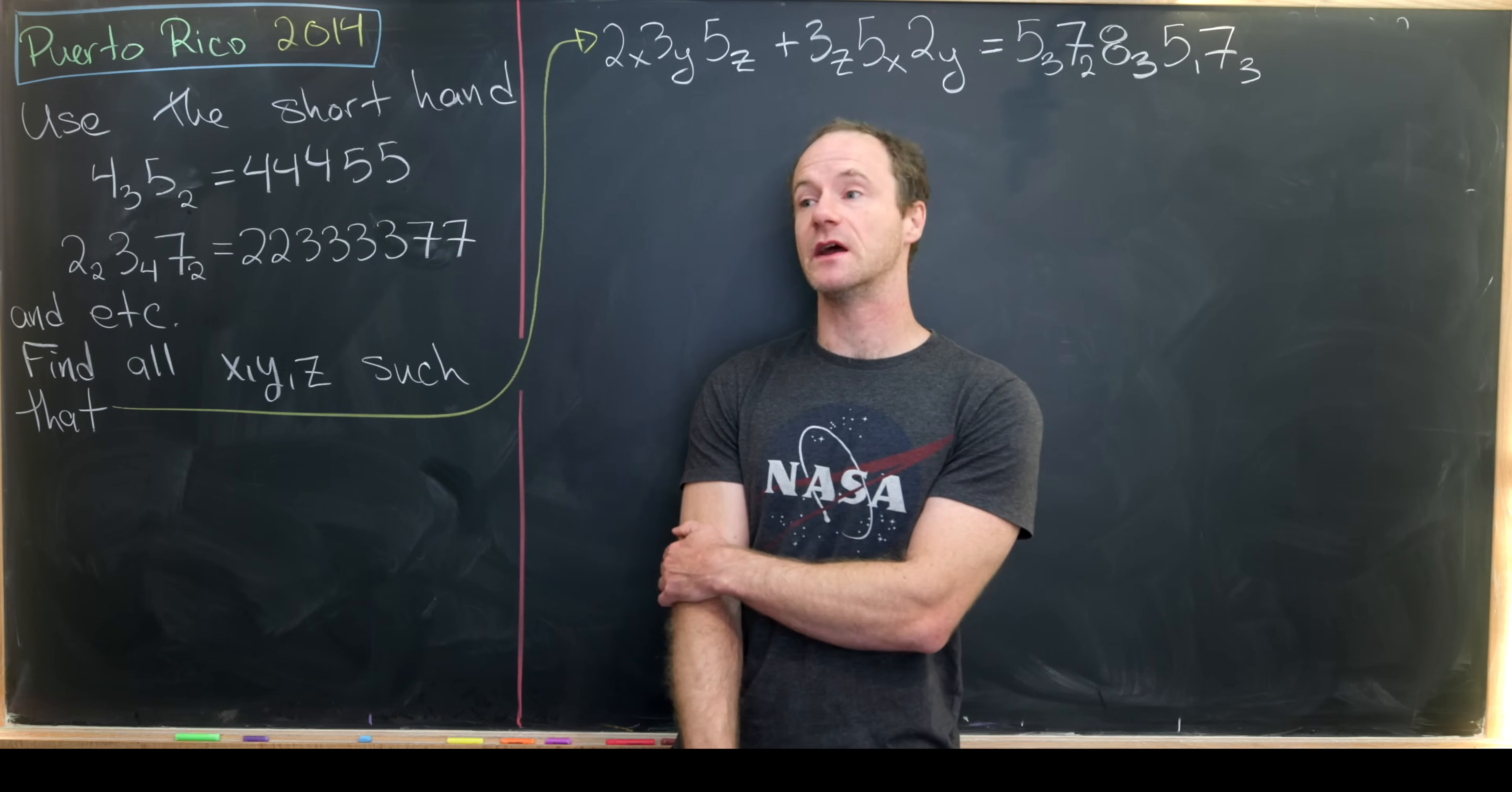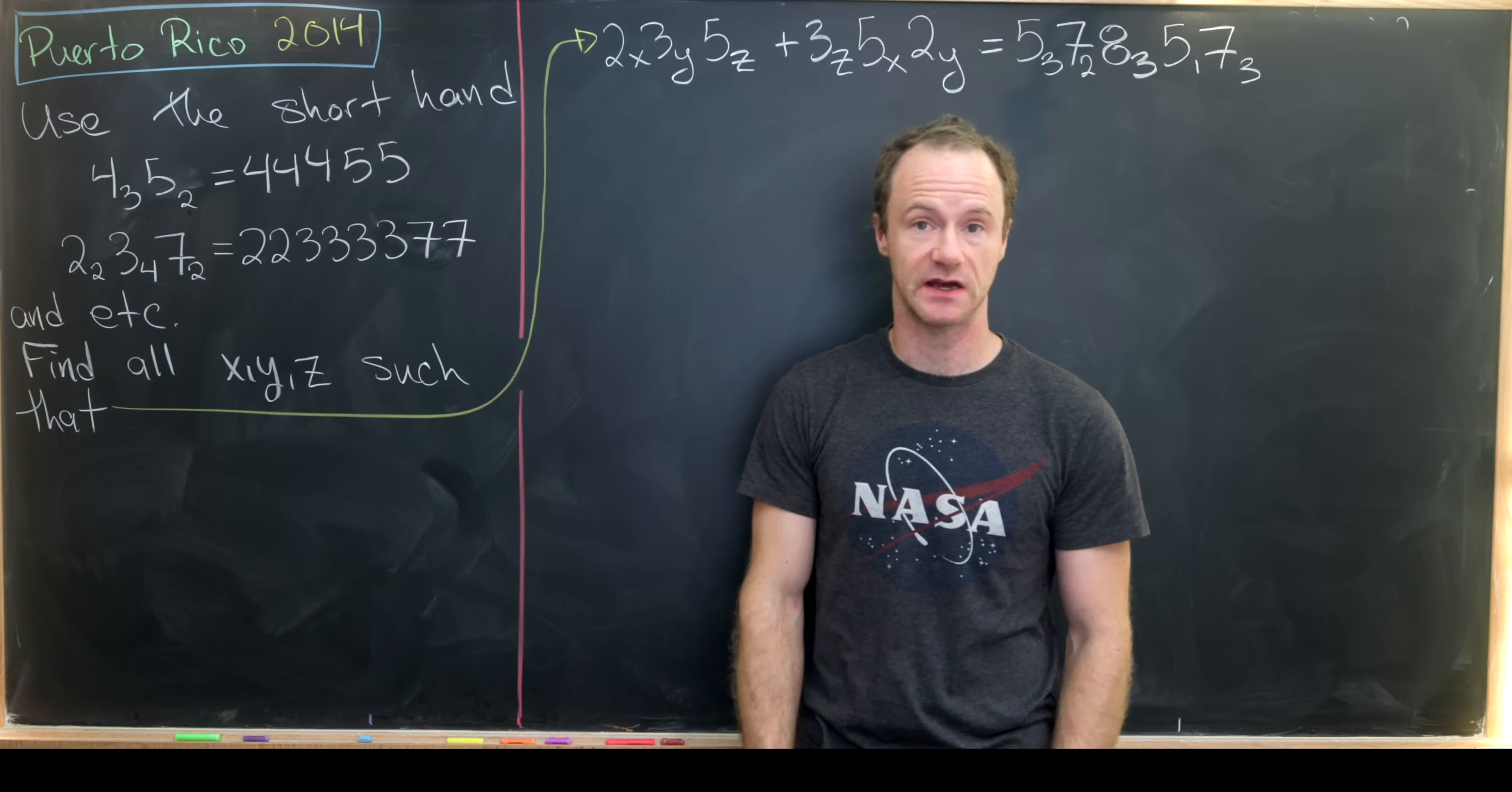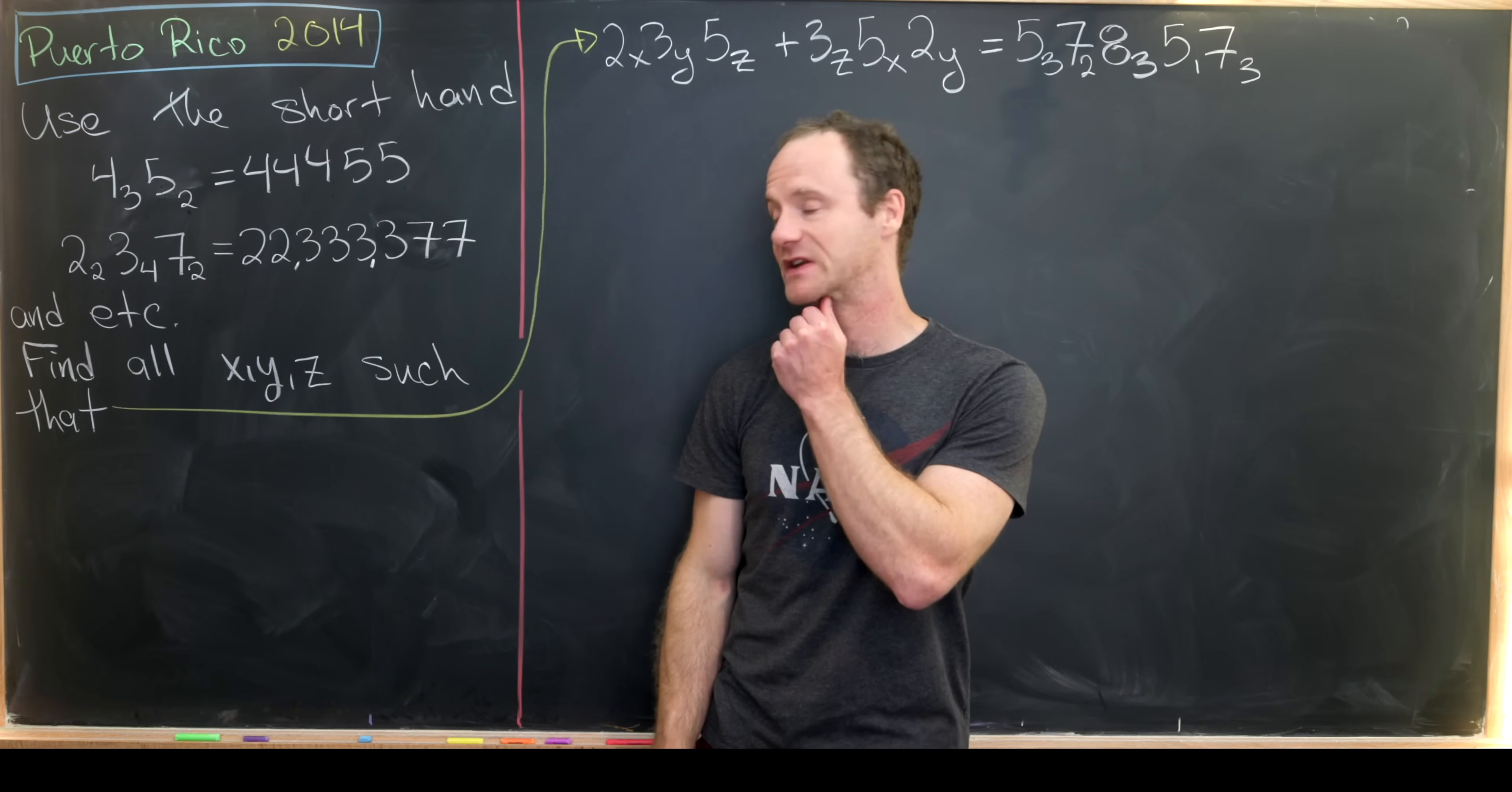Let's suppose that when writing a number down we can subscript a number to indicate how many times it's repeated in its decimal representation. For example, the number 4 sub 3, 5 sub 2 would be 44455. Notice 4 is repeated three times and 5 is repeated two times. Then the number 2 sub 2, 3 sub 4, 7 sub 2 would be 22,333,377.